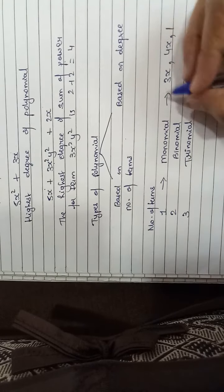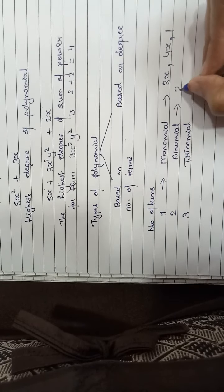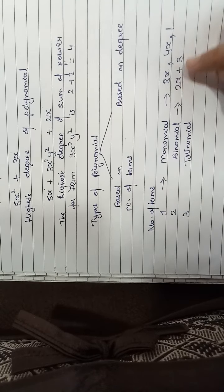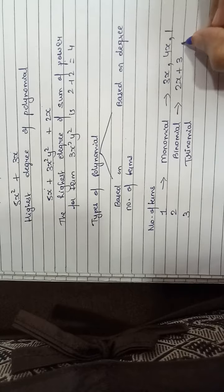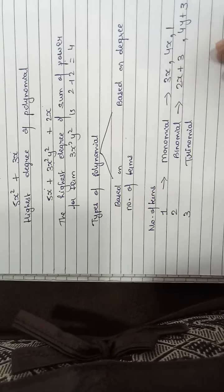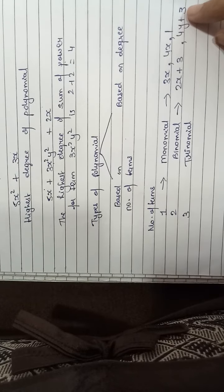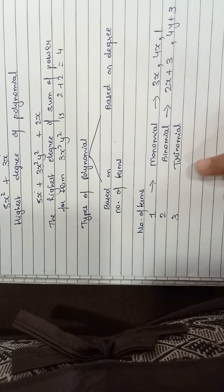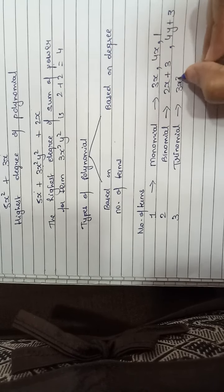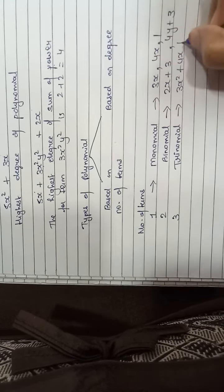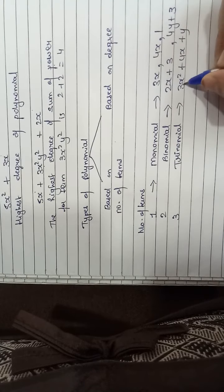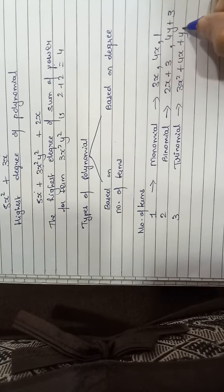Now coming to binomial. The example of binomial is 2x plus 3 — there are 2 terms, 1 and 2. One more example: 4y plus 3 — again 2 terms, so it is a binomial. Now coming to trinomial. The example is 3x square plus 4x plus y — this is my trinomial because there are 3 terms: 1, 2 and 3.